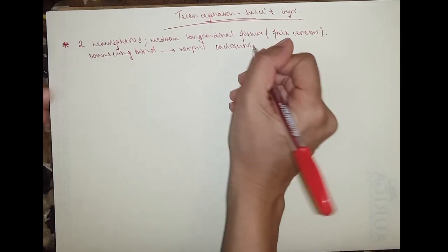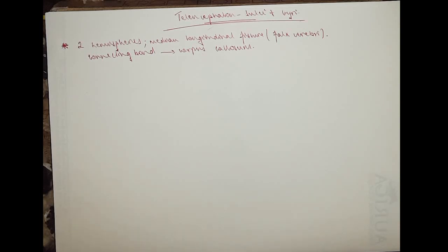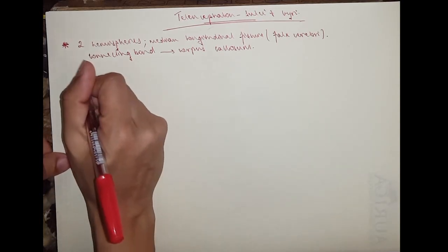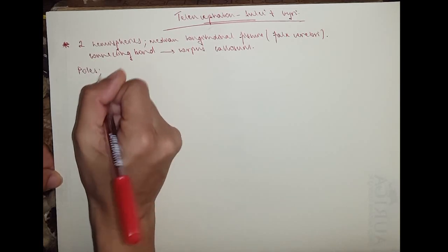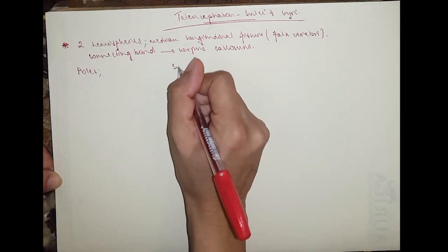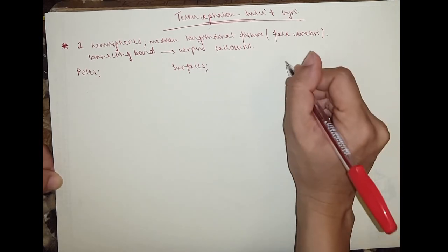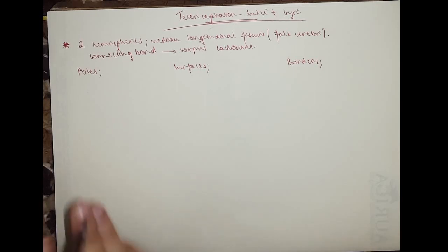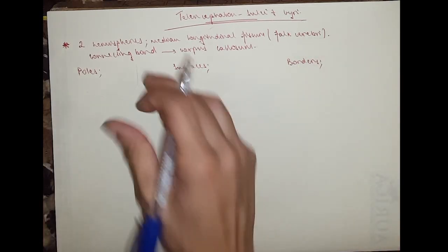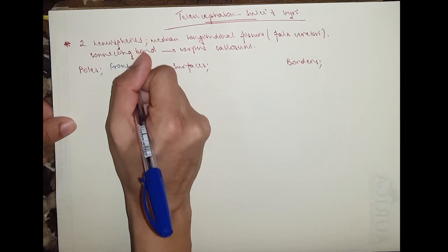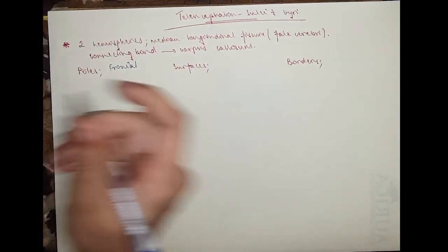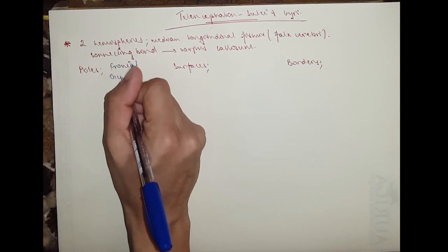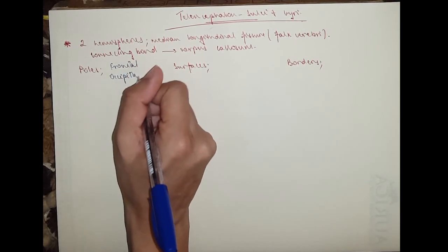There are three things to know about the cerebrum. The cerebrum has three poles, three surfaces, and three borders, which are pretty important. The poles would be the frontal pole, the occipital pole, and the temporal pole.